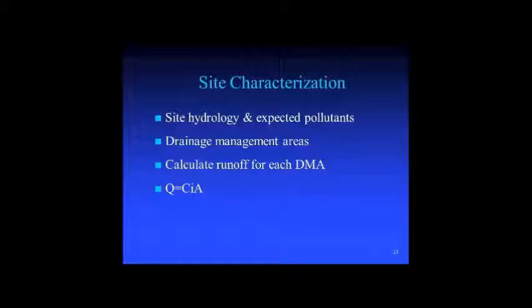With site characterization, you first look at what types of pollutants might be generated on the site. For example, a parking lot might see hydrocarbons from dripping automobiles. Every site is different, but a lot of these types of pollutants are pretty easily filtered out by using LID. In the water quality and hydrology plan, we want you to identify what types of pollutants are expected to be generated on the site.